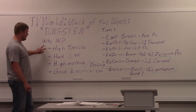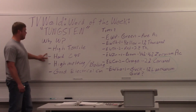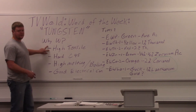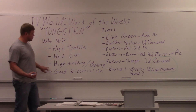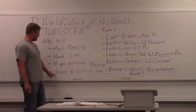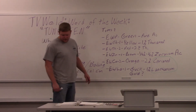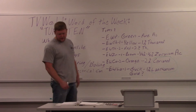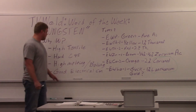Tungsten has high tensile strength — it's very hard, with a Rockwell hardness of C45 and a tensile strength of 500,000 pounds per square inch. Those are fun facts, but the real reasons we use it are its high melting temperature and high boiling temperature. The melting temperature is 6,107°F and the boiling temperature is 10,700°F.